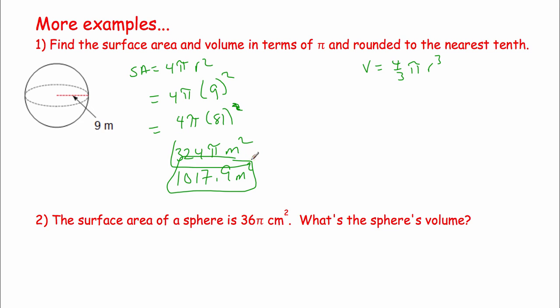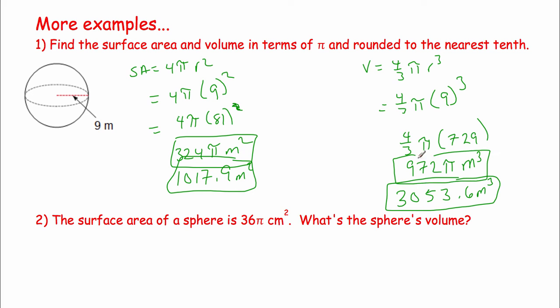Let's go over here: 4 thirds pi, r to the third. That's 9. 9 to the third is 729, so 4 thirds pi times 729. 4 thirds times 729 is 972. 972 pi, that is our exact answer. But if we want to round it to the nearest tenth, we should get 3053.6 cubic meters. We have our rounded, we have our exact.